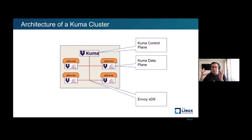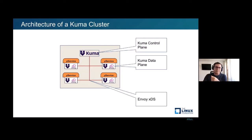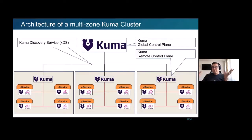Once deployed in a simple scenario, Kuma looks like this. You have your control plane and your data plane, which is essentially a Kuma agent plus an Envoy proxy running as a sidecar alongside your application. The communication between the data plane and the control plane uses the Envoy XDS, which is a control plane protocol used by Envoy.